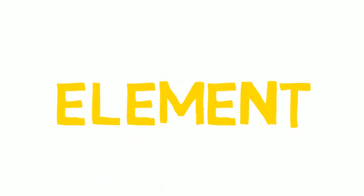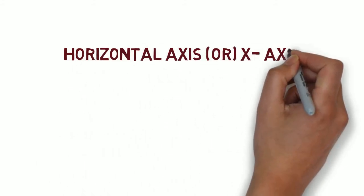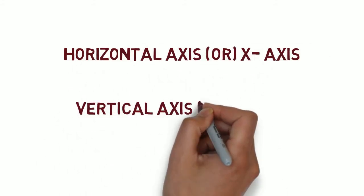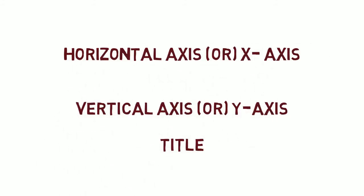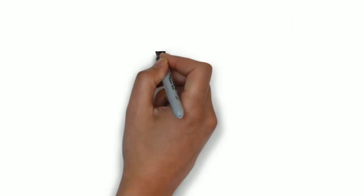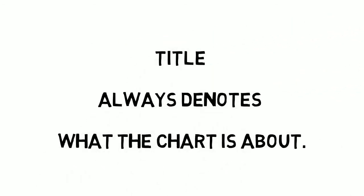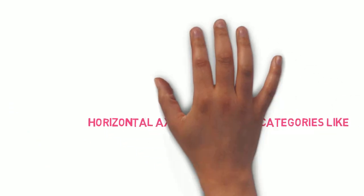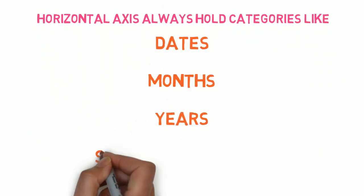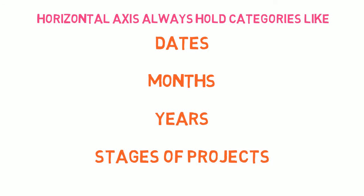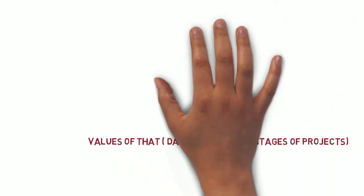Finally, the elements of line charts. There are three basic elements: the horizontal axis or x-axis, the vertical axis or y-axis, and the title. The title always denotes what the chart is about. The horizontal axis holds categories like dates, months, years, or the stages of projects. On the y-axis, we take the values corresponding to those categories.